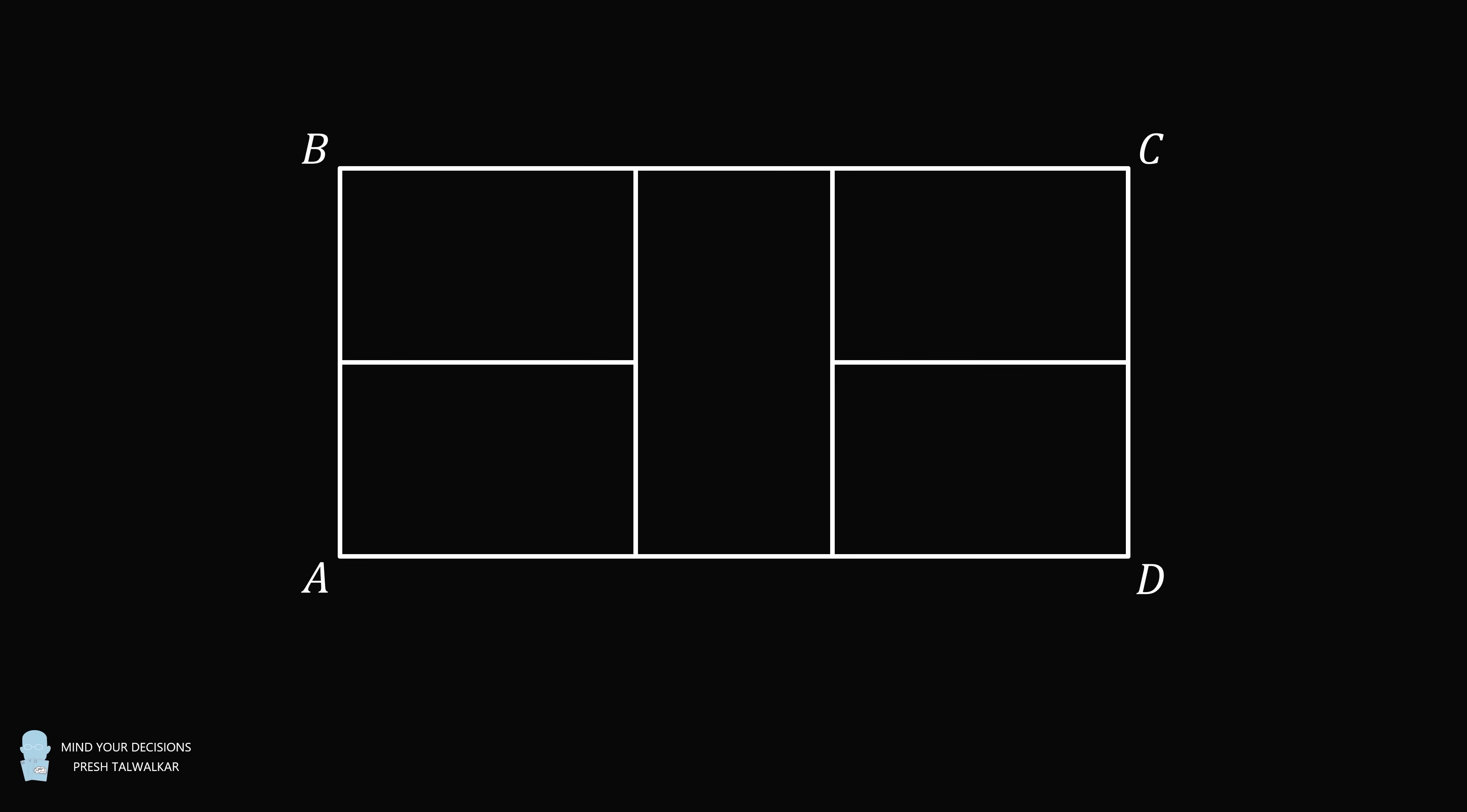Hey, this is Presh Talwalkar. ABCD is a rectangle that's made up of five different rectangles that are congruent to each other, as shown.